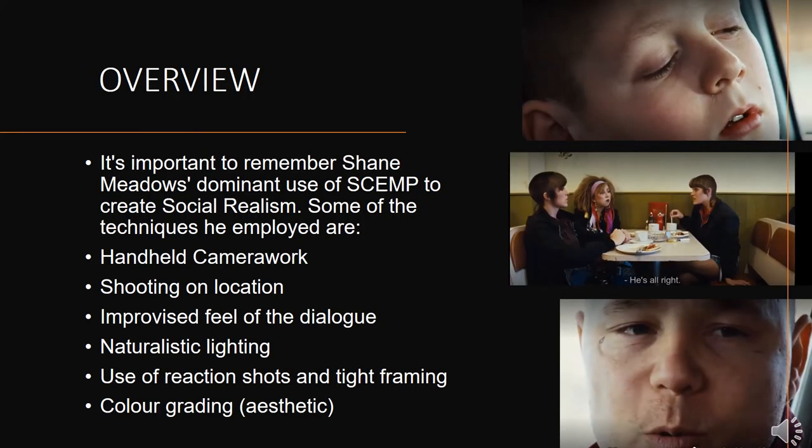Shane Meadows is on record as saying this is his most personal and autobiographical film. His dominant use of SCEMP is to create a social realist film. Some techniques he employs include hand-held camera work so it feels more natural, shooting on location rather than in a studio, dialogue that feels improvised, and Tom Turgoose, who plays Sean, had not acted before starring in this film. Lighting feels quite natural and he uses a lot of reaction shots and tight framing to really show off the performance of the actors involved.